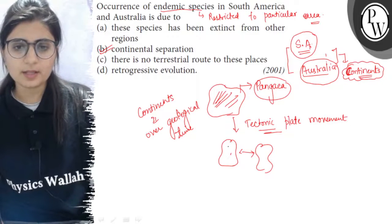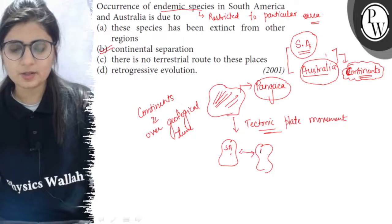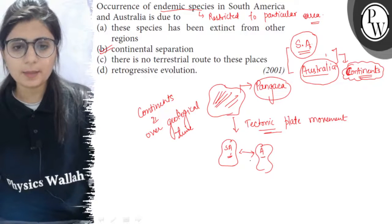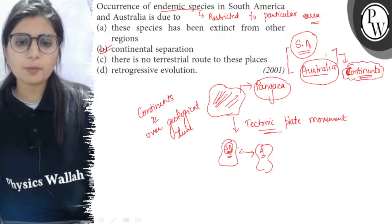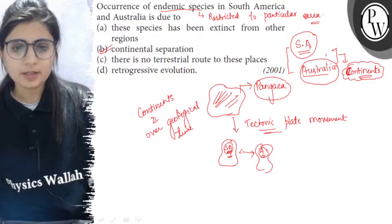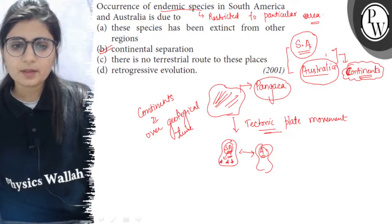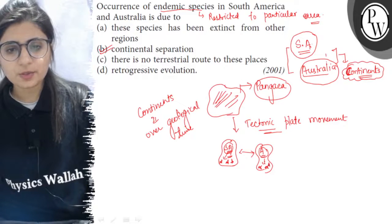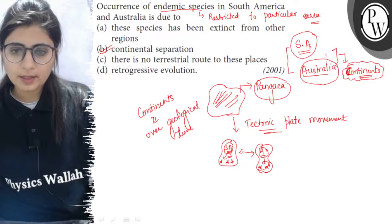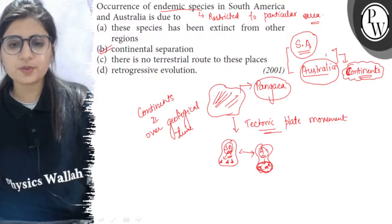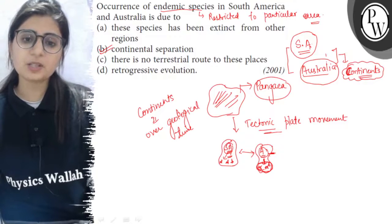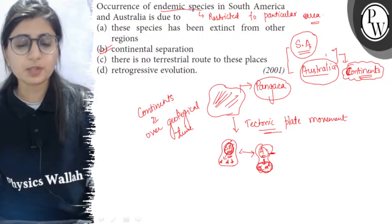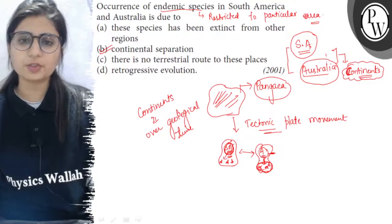Now, as these two continents — South America and Australia — have different climatic conditions and different geographical conditions, due to different topography, geography, and climatic conditions, the organisms here evolved in different directions. The species found in Australia are restricted to that area because of the particular climatic and geographical conditions they require. Also, the species of South America will not be able to survive in Australia because of different climatic conditions.